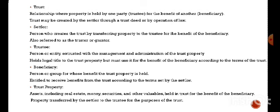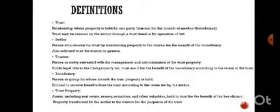Trust property consists of assets including real estate, money, securities, and other valuables held in trust for the benefit of the beneficiary. The subject of the trust agreement is the trust property — it can be anything like real estate, money, securities, or any other valuable from which the beneficiary will receive benefit. The property transferred by the settlor to the trustee for the purpose of the trust is the trust property.